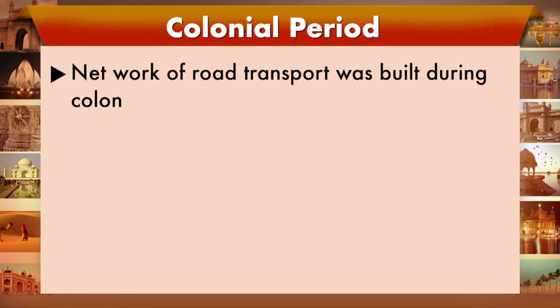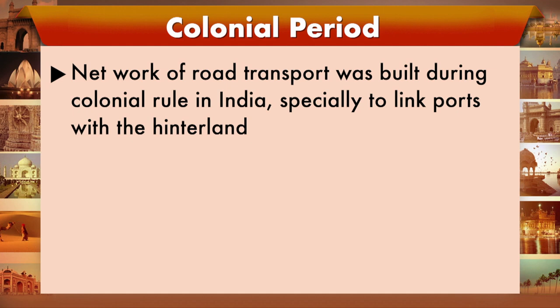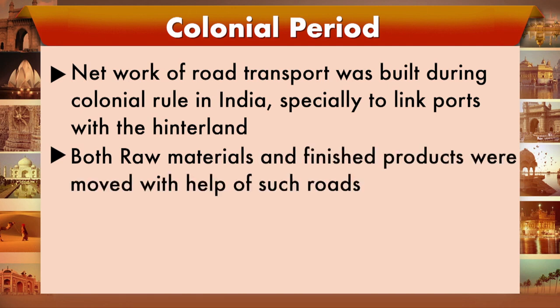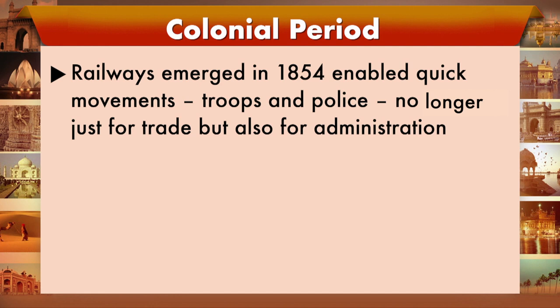In the colonial period, British colonial rulers linked the ports to the hinterlands, as they came as merchants needing to transport raw materials and finished products. Roads were laid for trade, and railways emerged as the biggest development during this period — serving both trade and administration. Railway lines were used to disperse not only goods but also troops and police, giving the administration control over the land. Scheduled air service also started during the colonial era.